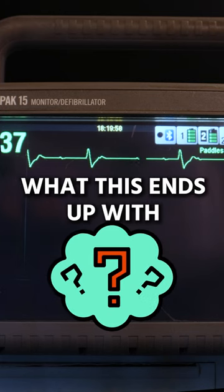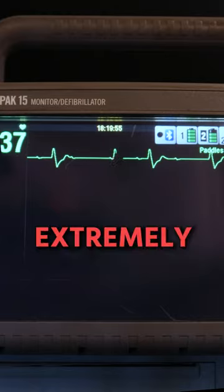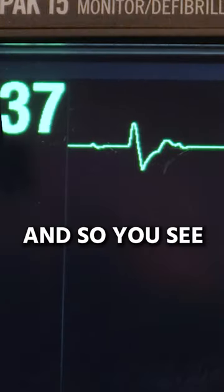So what this ends up with, P's and QRSs are firing at random, and we have an extremely, extremely low rate. And so you see here, the heart rate's about 37.